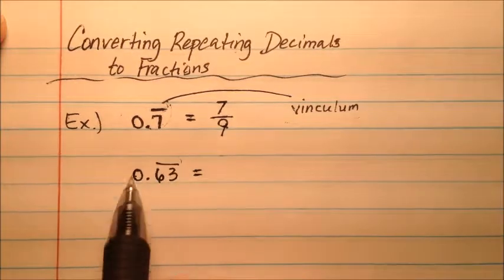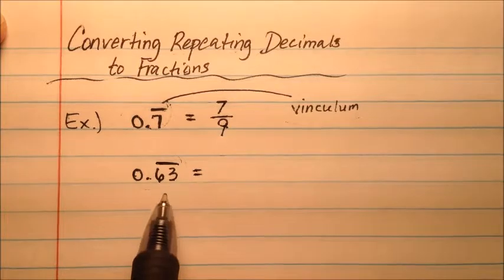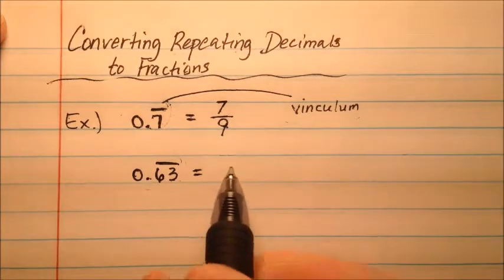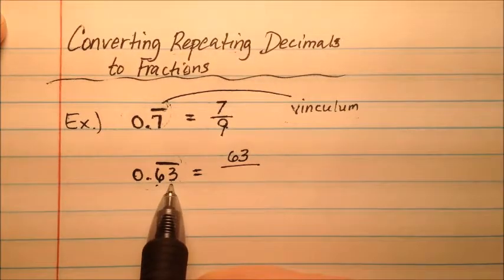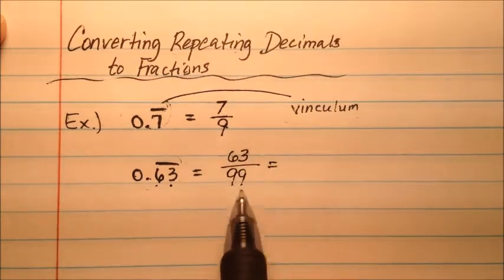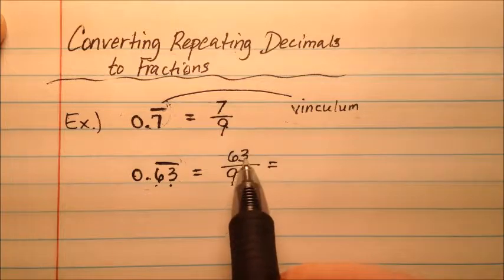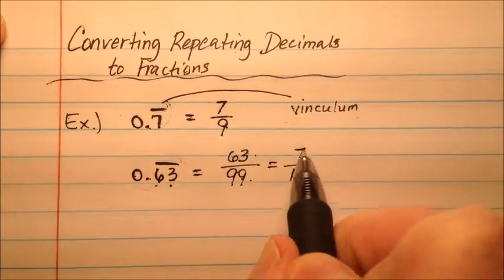That goes right into our second example, 0.63, where both the 6 and the 3 are repeating. So 0.6363. In this case, there are two digits that repeat, so we're going to put it over two 9s: 63 over 99. I notice we can reduce this. We can divide the top and the bottom by 9, so it becomes 7 over 11.